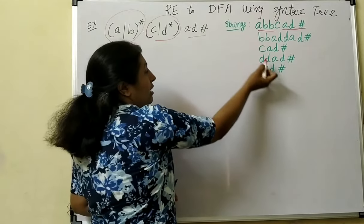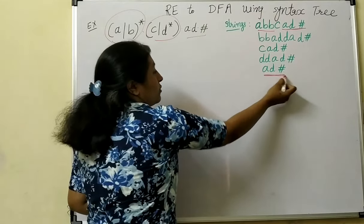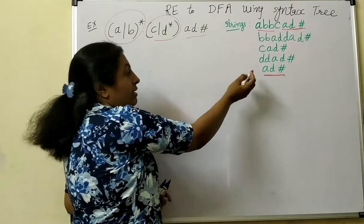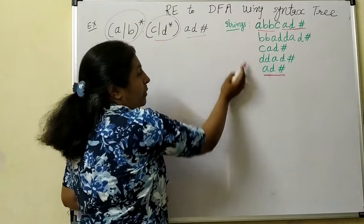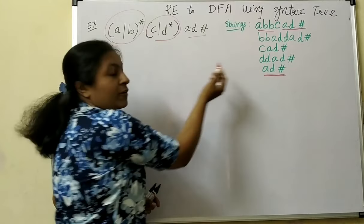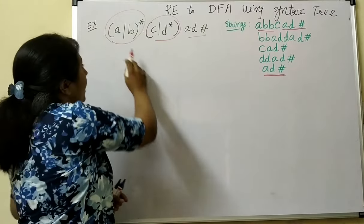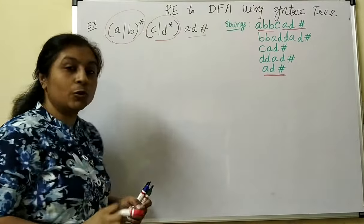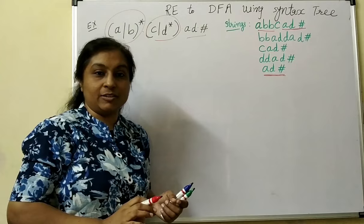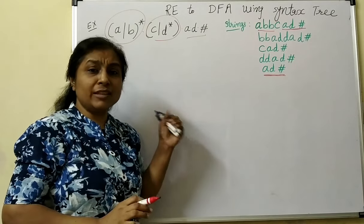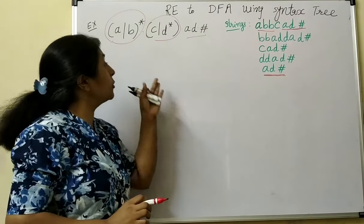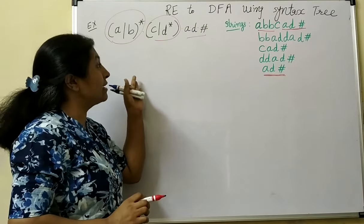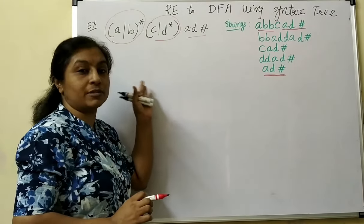Similarly, the ending string is compulsory. The remaining portion before this string can be generated using the first two concatenations. Now let us see how to construct the syntax tree from this.